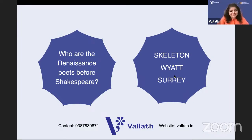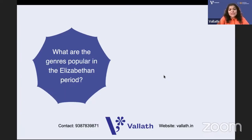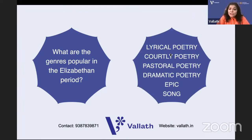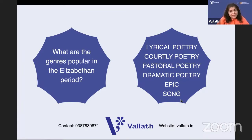The most popular genres in the Elizabethan period include sonnets, pastoral poetry, epyllia - like Shakespeare's Venus and Adonis - lyrical poetry, courtly chivalric poetry, dramatic poetry (all of Shakespeare's plays are in verse), and songs. Tottel's Miscellany was first called Songs and Sonnets, so songs were very popular at that time.